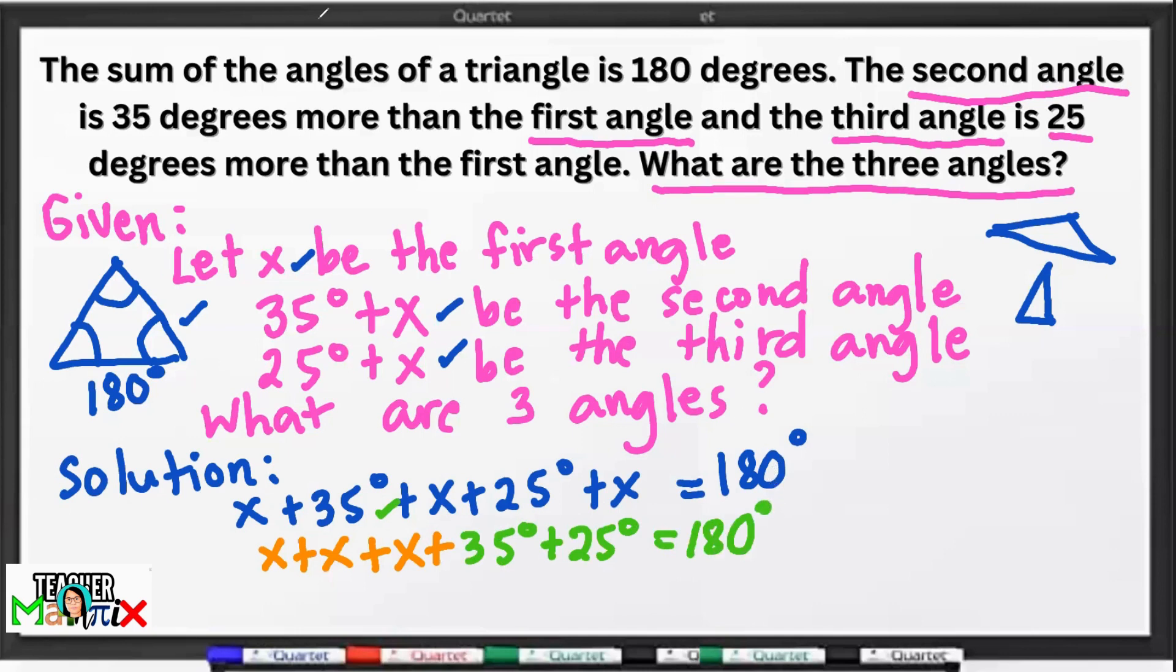Now, let us get their sum accordingly. So, sa three variables na x, x, x, we have 3x. And plus, 35 plus 25 degrees yan. Equals 60. Then, i-copy itong equal sign, then, 180 degrees. Well, we're not yet done. Continue dito. So, i-copy yan muna. Yung 3x plus 60 equals 180 degrees.